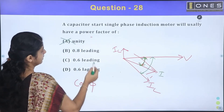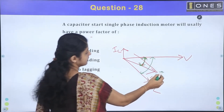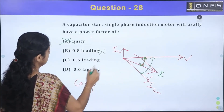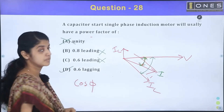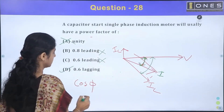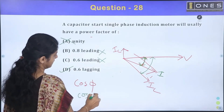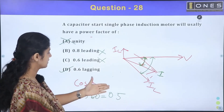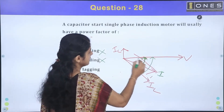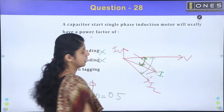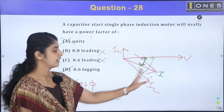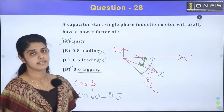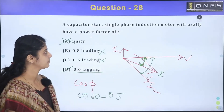The resultant current is 0.8 leading relative to the resultant voltage, but this result is lagging. The reason is cos 60° equals 0.5. The correct answer for the power factor is 0.5 lagging.